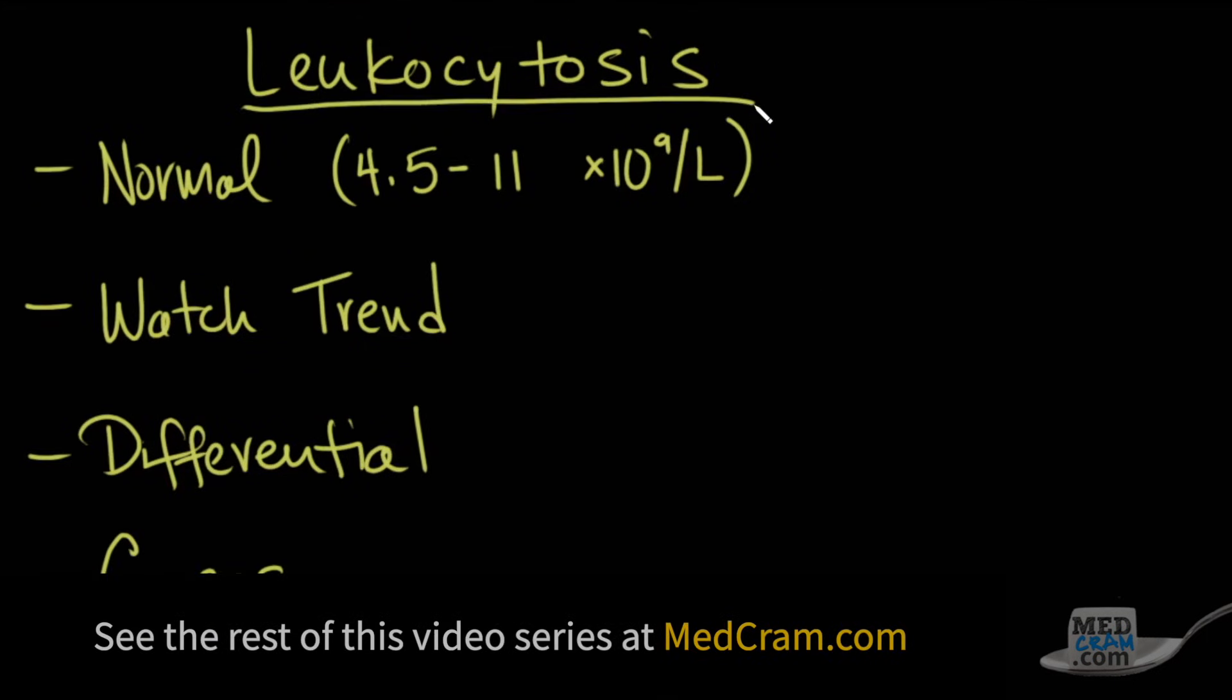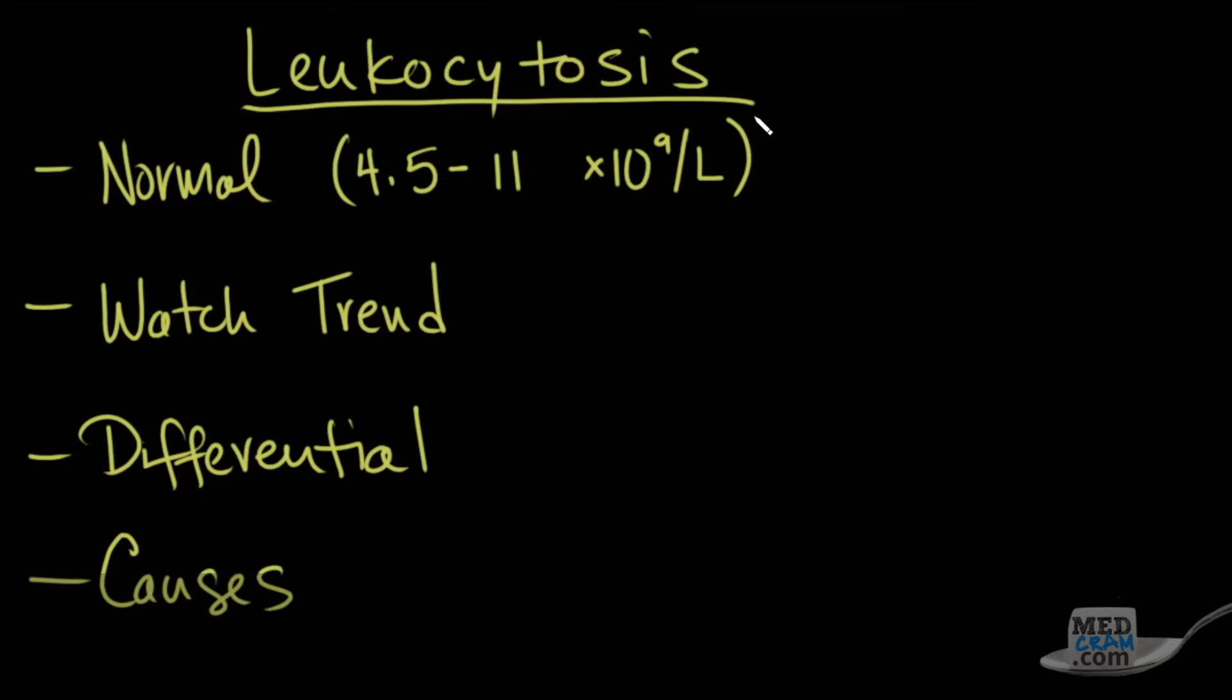So a couple of points regarding leukocytosis. We're looking at a patient most typically in the hospital, but this could also be seen as an outpatient as well. You should know that the normal range is about 4.5 to 11 times 10 to the 9th, which is like a billion divided into one liter. So how many cells do you see in one liter? Obviously anything greater than 11 is going to define leukocytosis, but it can go as high as 100,000.